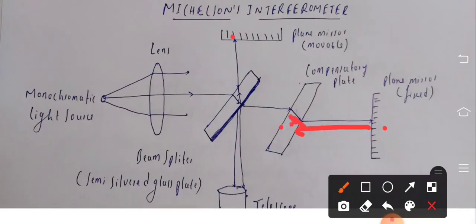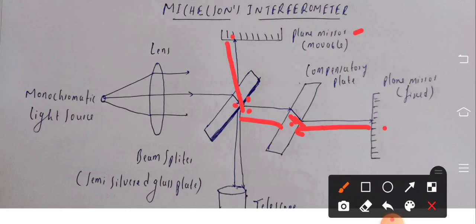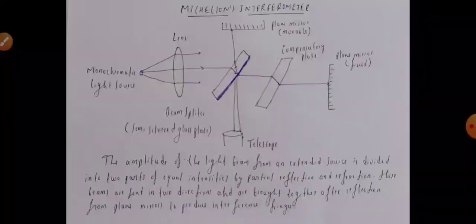The light waves retrace their paths and get refracted again. The light wave incident on the lower surface of the beam splitter and the wave reflected from the movable plane mirror also retrace their paths and are incident on the lower surface of the beam splitter. These two waves then reach the telescope, superpose, and form an interference pattern. This is the working of the Michelson interferometer.